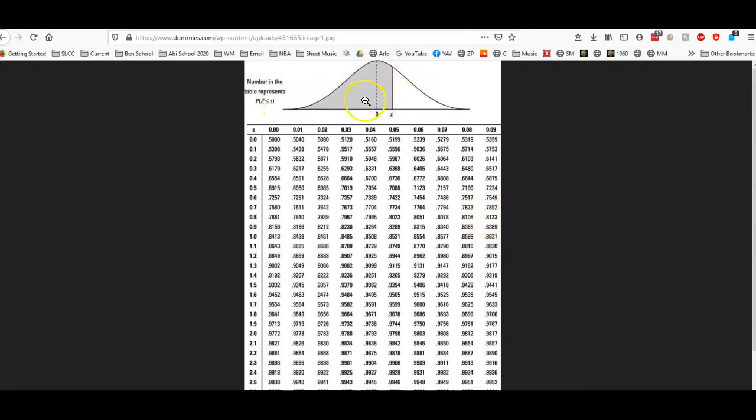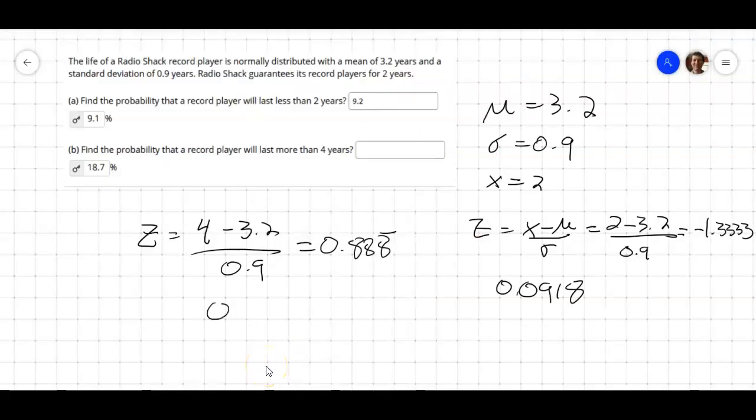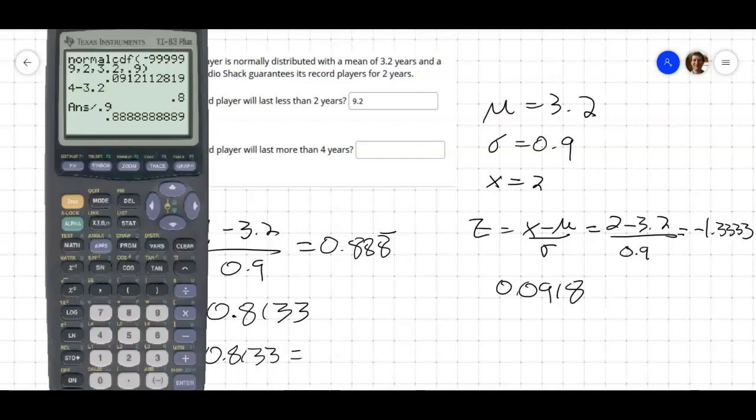But this is the area to the left of the z-score. We want the area to the right because we want to find out what's the probability it lasts more than 4 years. So we're going to have to take this 0.8133, which is to the left, and do 1, which is all of it, minus that to the left to get the stuff to the right. So 0.8133, this is the probability that we're less than 4 years. So the probability that we're greater than 4 years is 1 minus this value. And we're getting 0.1867.